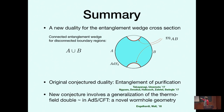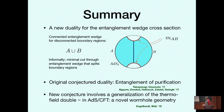If we consider some disconnected boundary region A union B, and we think about a situation where the entanglement wedge is non-trivial — meaning it's connected in the bulk — here's a picture of that. Here are A and B, and the Ryu-Takayanagi surfaces are these red curves. In this situation, you can define the entanglement wedge cross-section, which intuitively is just the minimal cut through this entanglement wedge — the blue region — that splits the two boundary regions A and B. It's the area of that minimal cut.